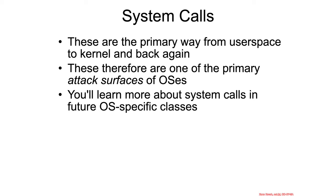So what's the conclusion about system calls? These are the things that are the primary way that an operating system gets from user space to kernel and back again. No longer are people tending to use call gates or interrupts — it's the system call assembly instructions, primarily for performance reasons.